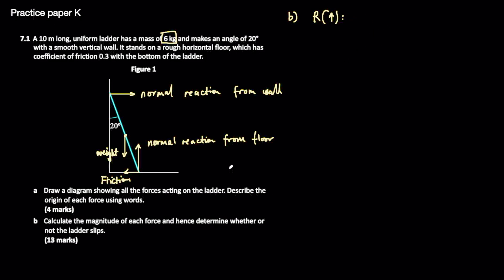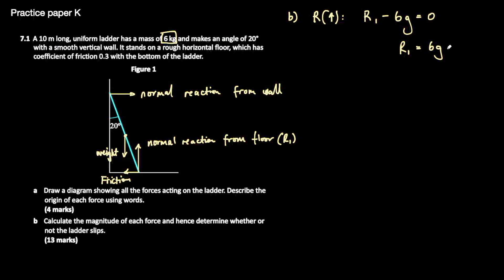The weight also allows us to find the normal reaction from the floor, because they're the only two forces acting vertically. Resolving vertically: the normal reaction force from the floor, which I'll label R1, minus the weight (6 times g) equals zero, because this ladder is not moving up or down — it's only going to move sideways. So R1 equals 6g, which is 6 times 9.8 — put that into a calculator and you get 58.8 newtons. That's the normal reaction force pushing up from the floor.